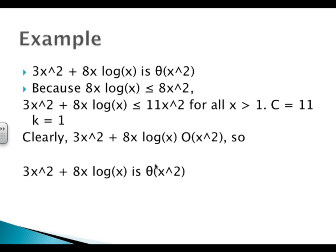For the mathematical example: 3x squared plus 8x log x is Big Theta of x squared. Because 8x log x is less than 8x squared, you can use that for your c value. So 3x squared plus 8x log x is going to be less than 11x squared. We have 11 because you need at least 3x squared to match that term, and since 8x squared is bigger than 8x log x, your c value becomes 11. Whenever x is greater than 1, 11x squared grows faster than 3x squared plus 8x log x.